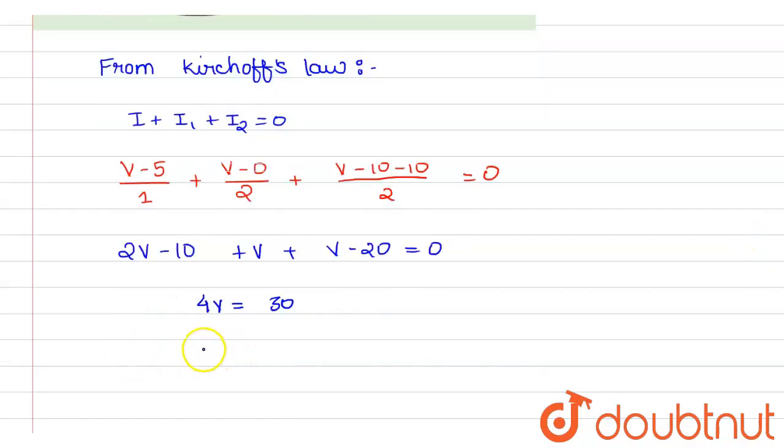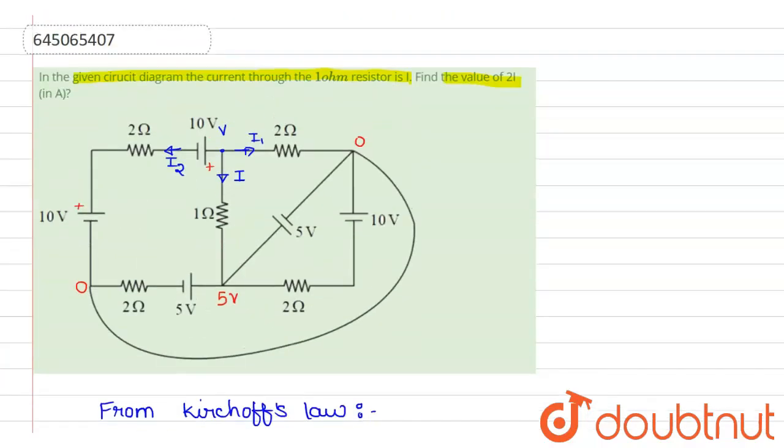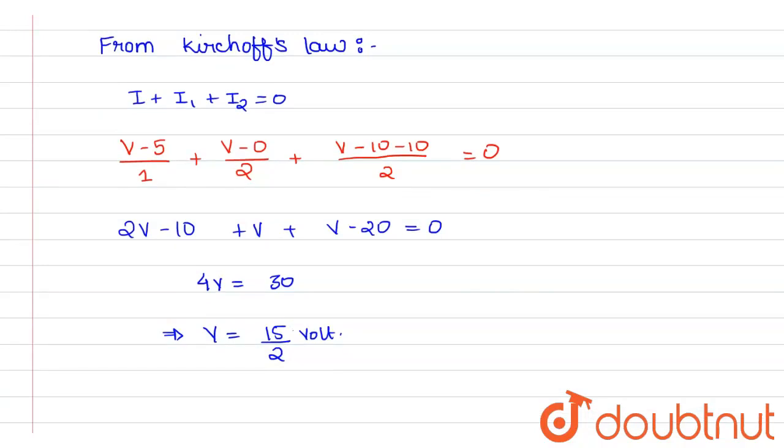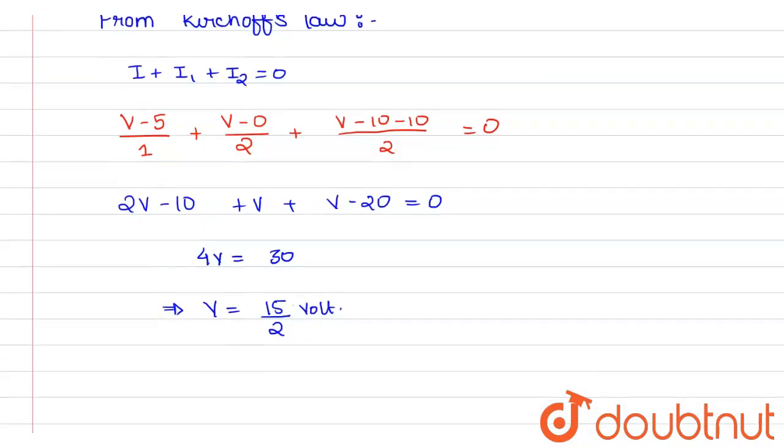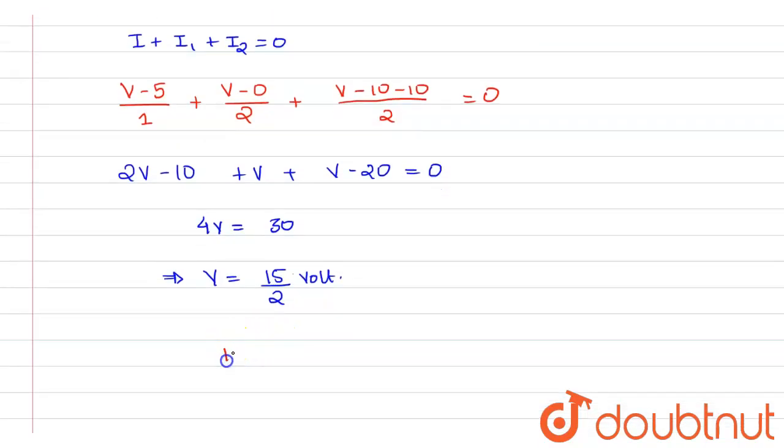Now we have found the voltage v. So we can easily find our i, and i is nothing but (15/2) minus 5 upon 1, and this is in amperes.